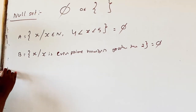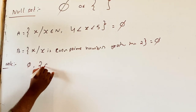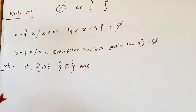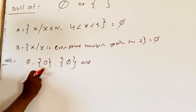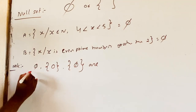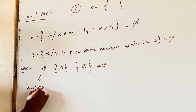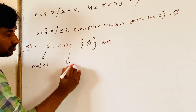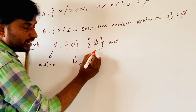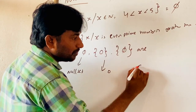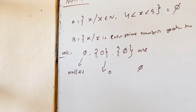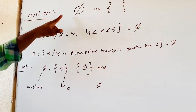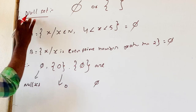Now observe: phi, the set {0}, and the set {π} are three different sets. Phi means the null set — it has no elements. The set {0} is not an empty set; it contains one element, which is zero. The set {π} is also not an empty set; it contains one element, which is pi. A null set is a set with no elements.